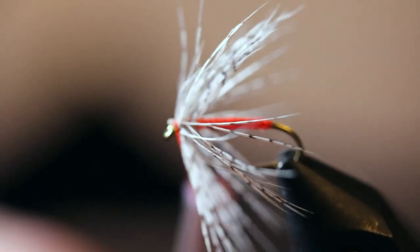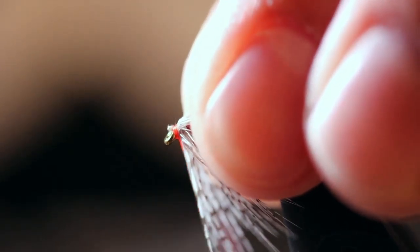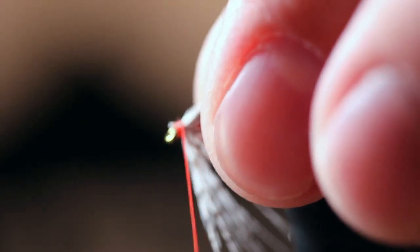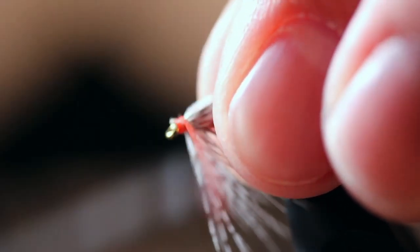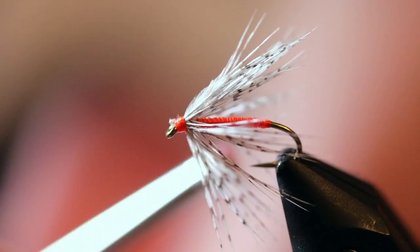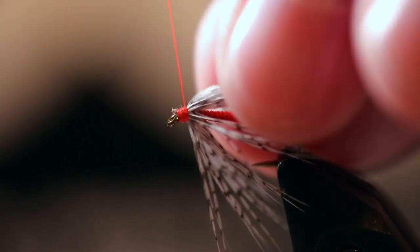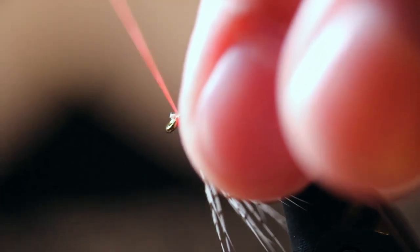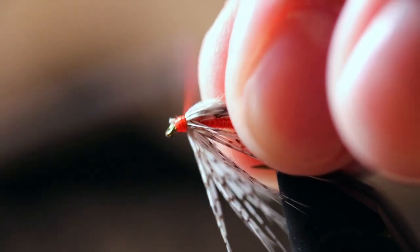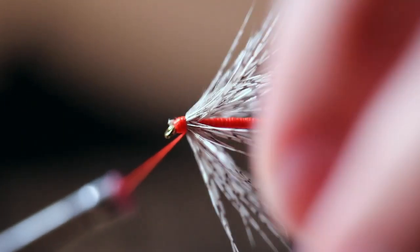Snip it off. And while holding everything back, just create a little small thread head. This is going to help hold those feathers back on the fly.